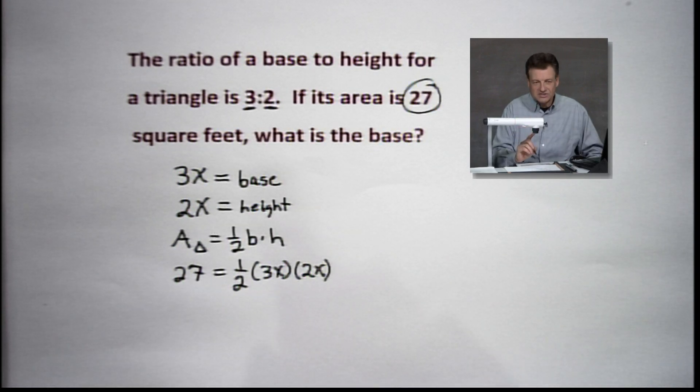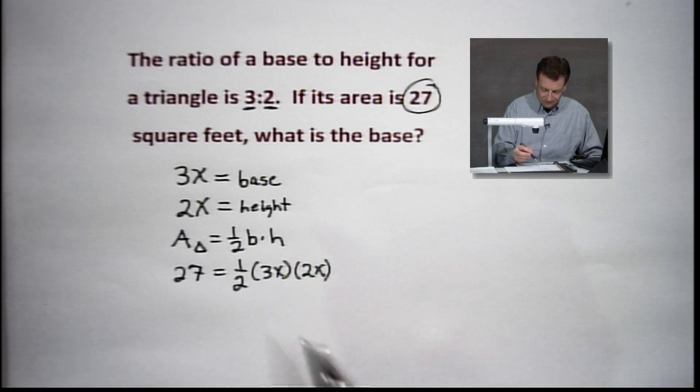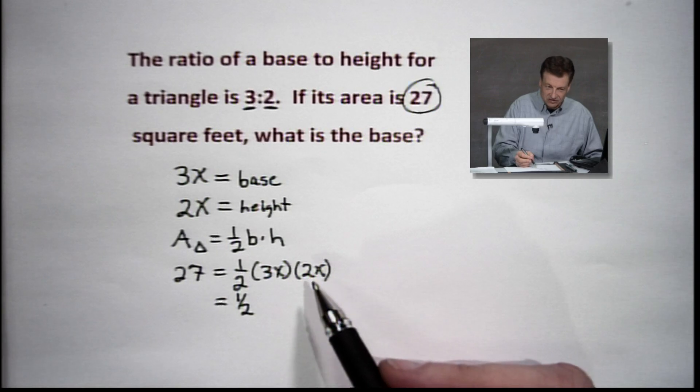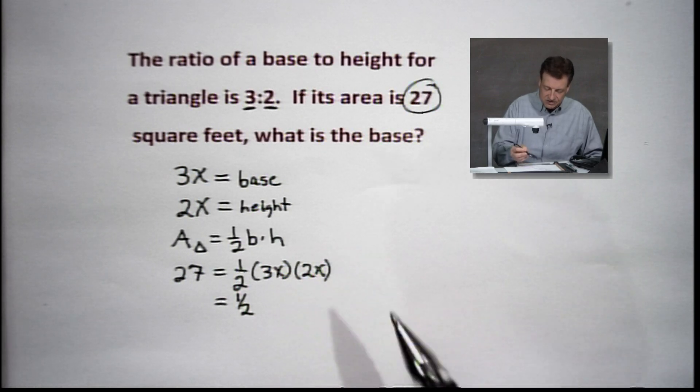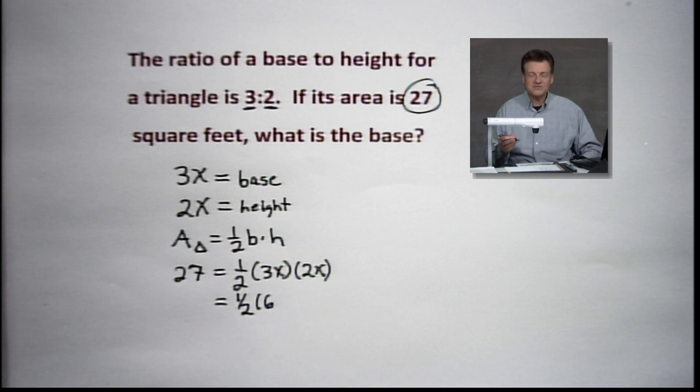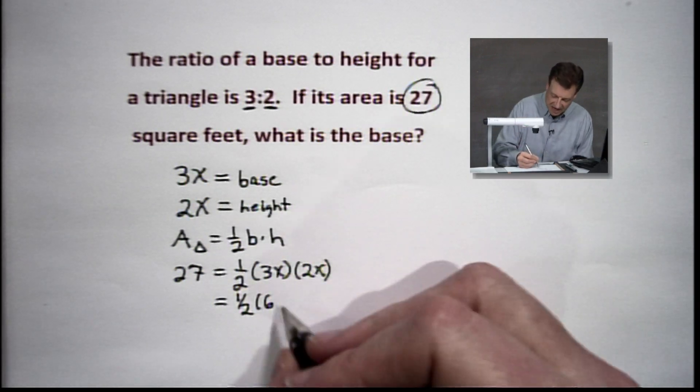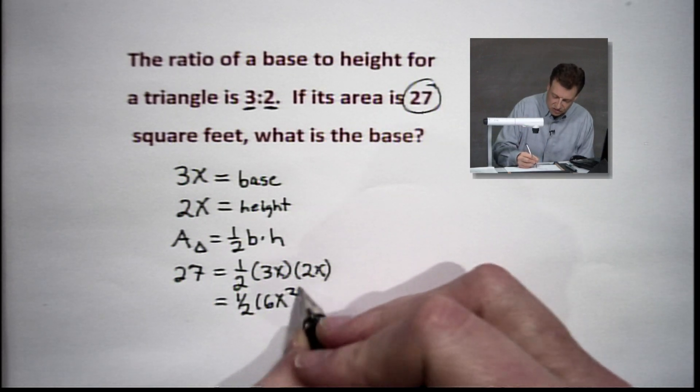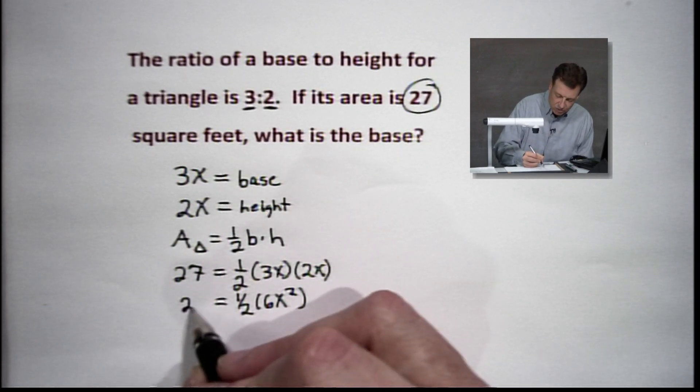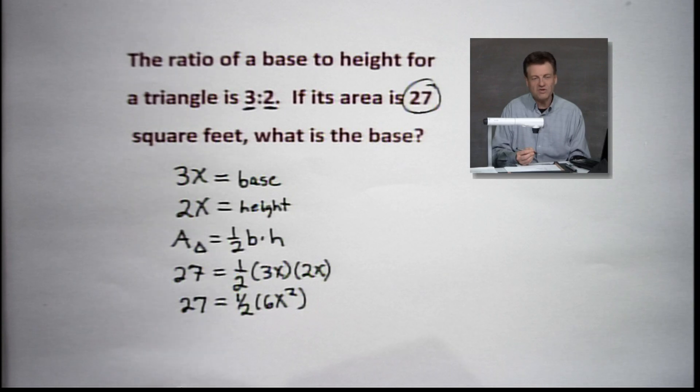Now, here's where my students sometimes go astray. We look at this 1 half, and we notice 3x times 2x. And they get all excited. And 3 times 2 is 6. And they say x times x is x. It is not x. It is x squared. So be careful on that. And we still keep our 27 rocking and rolling right over there.